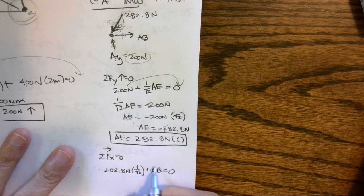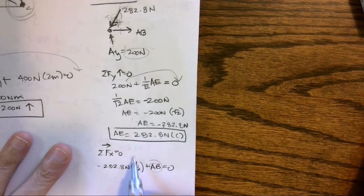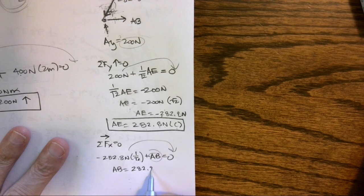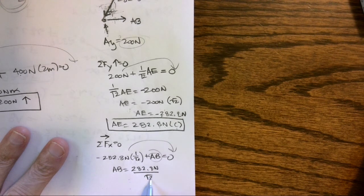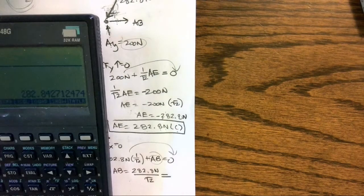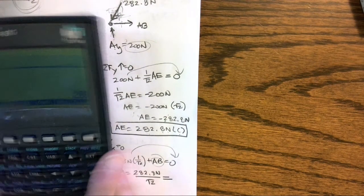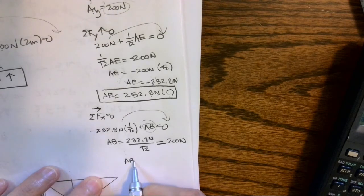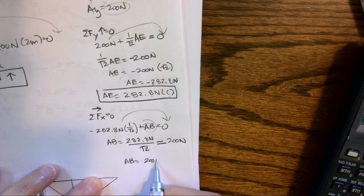Again, I'm trying to isolate AB. Move this to the right side: AB equals 282.8 Newtons divided by the square root of two, and I get 200 Newtons.